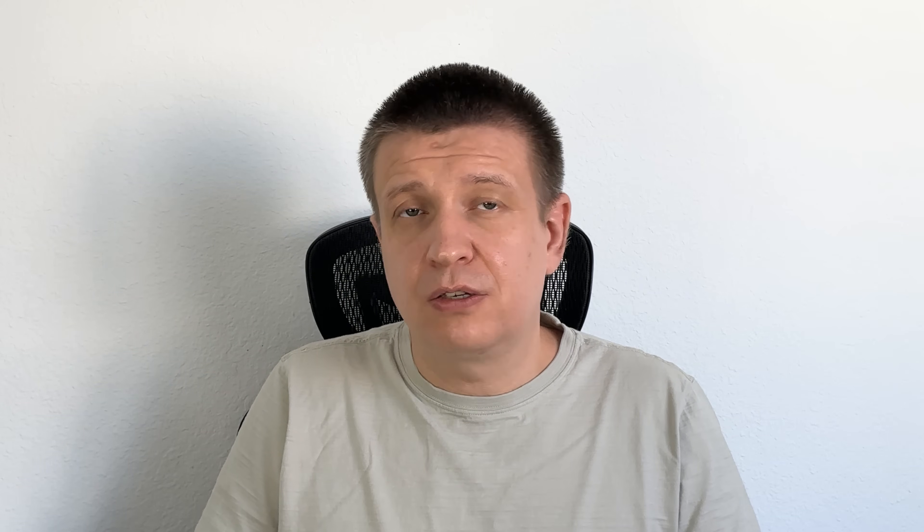A couple of things to note: if it's a GET request, you can create an HMAC signature from an empty string or from the HTTP method, path, and query parameters. If it's a POST request, you hash the body of the request. Also, it is important to remember to use the raw body of the request when validating the HMAC signature on the receiving end. Certain framework middleware used to parse the request body may change spacing or add line breaks. In the case of Express.js, rather than using req.body, you should save the raw body to req.rawBody before parsing the request.